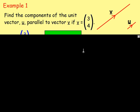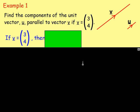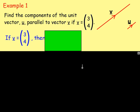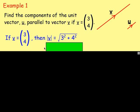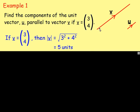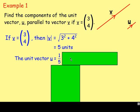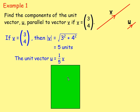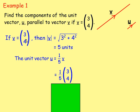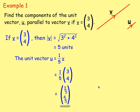Find the components of the unit vector U parallel to vector V if vector V is (3, 4). We know vector V is (3, 4). The first thing we need to do is find the length of that vector. The magnitude would be the square root of 3 squared plus 4 squared, and you would end up with 5 units. So we know the length of vector V is 5. To find the components of the unit vector, you divide vector V by its length, so the unit vector will be one-fifth of V. So vector U equals one-fifth of (3, 4), which gives components 3/5 and 4/5. So that will be your unit vector.